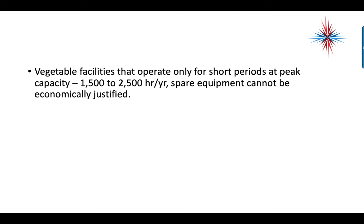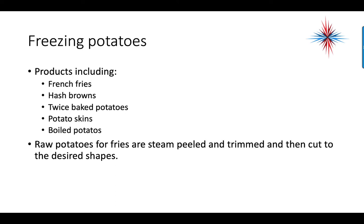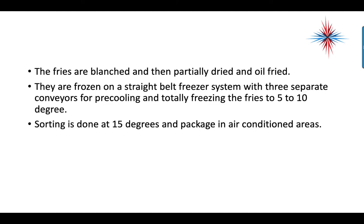Spare equipment cannot be economically justified, so the bottom line is if it breaks down, it has to be fixed — there are no spares. For freezing potatoes, products include french fries, hash browns, twice-baked potatoes, potato skins, and boiled potatoes. Raw potatoes for fries are steam-peeled, trimmed, and cut into desired shapes. The potatoes are blanched — scalded with hot water — partially dried, and oil-fried. They are frozen on a straight-belt system with three separate conveyors for pre-cooling and totally freezing the fries to 5 to 10 degrees. Sorting is done at 15 degrees and packaging is done in air-conditioned areas.